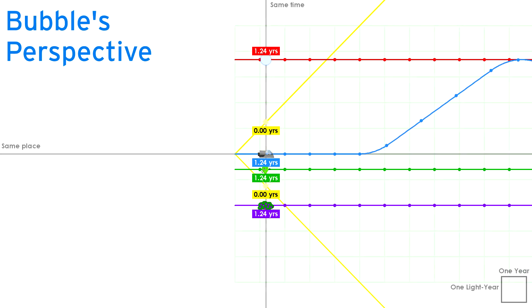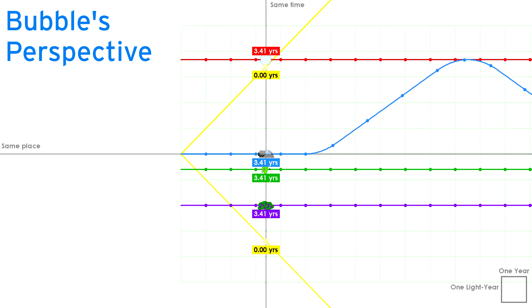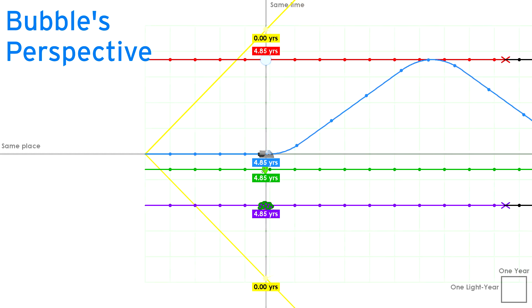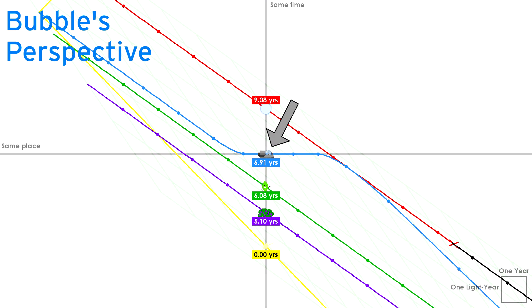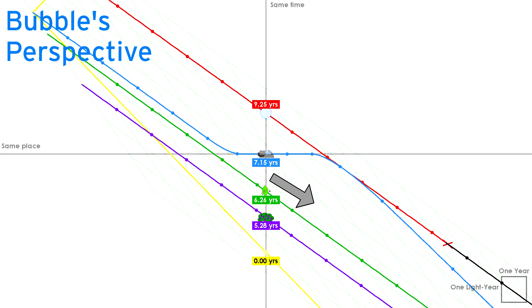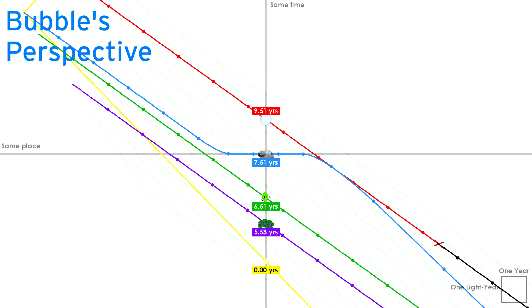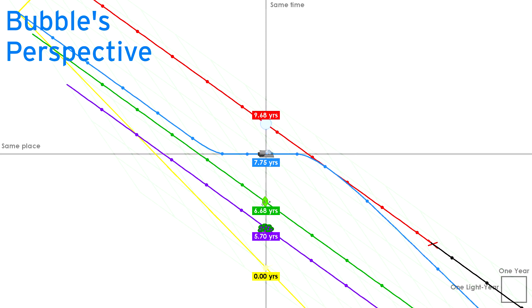Hold on, we said fast moving objects advance slower in time. So in the long run, Bubble will age slower. But from Bubble's perspective right here, Bubble is perfectly still and Leafy is flying south at 70% the speed of light. Shouldn't Leafy age slower from Bubble's perspective?